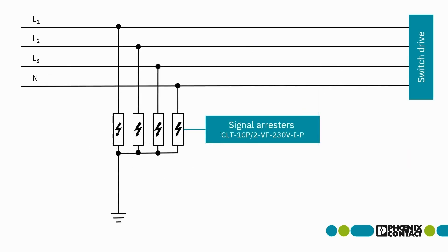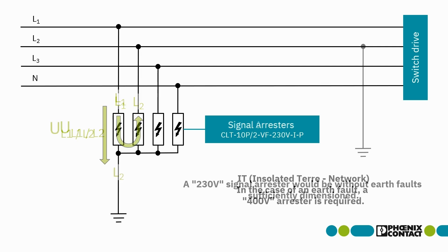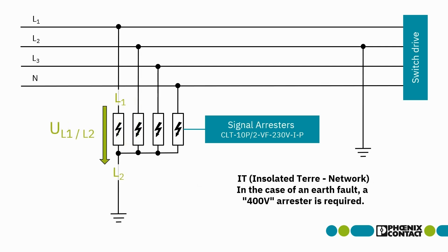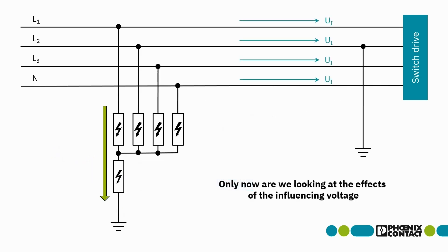Here is a practical example. First, without influencing voltage: in normal operation, the interlinked voltage of 400V is applied via two arrestors. In the event of an earth fault, the earth potential assumes the L2 potential, resulting in 400V at the arrestor. However, a 230V arrestor is not designed for this load capacity. As a measure, another arrestor — the summation arrestor — is integrated. Now the interference voltage should also be taken into account.